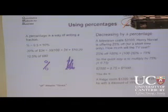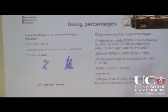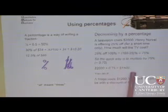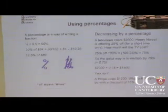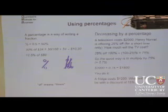I was surprised there were people who didn't know this, but you know it now. The quick way is to multiply by 75%, so 2,000 times 0.75 equals $1,500. Now quickly write this one down: a fridge costs $1,200 — what will the price be after a discount of 15%? Even if you haven't got your calculator, just write down what you would do.